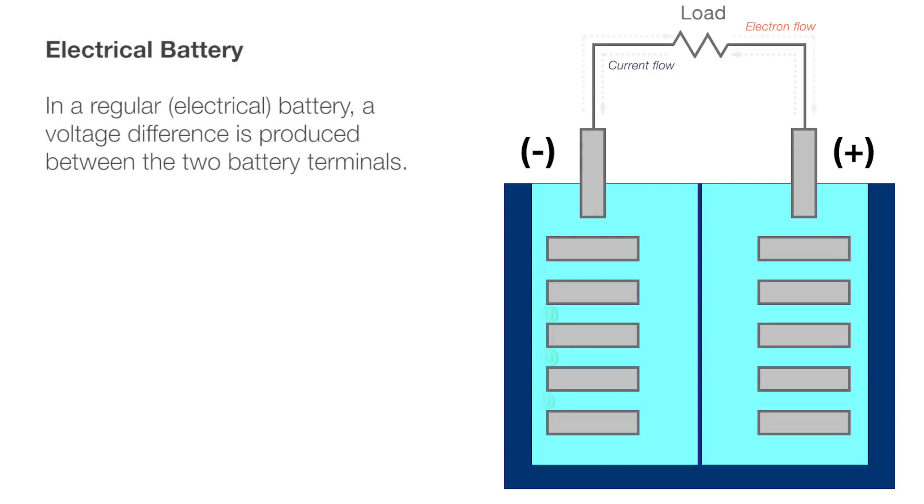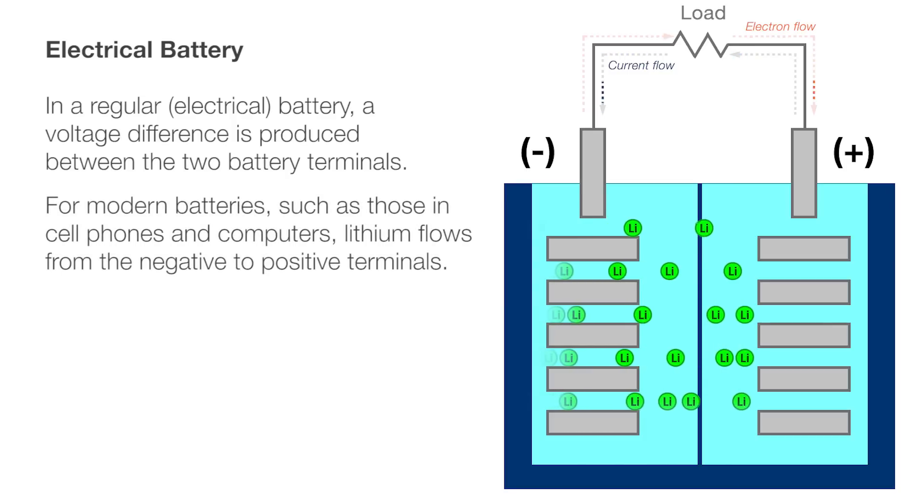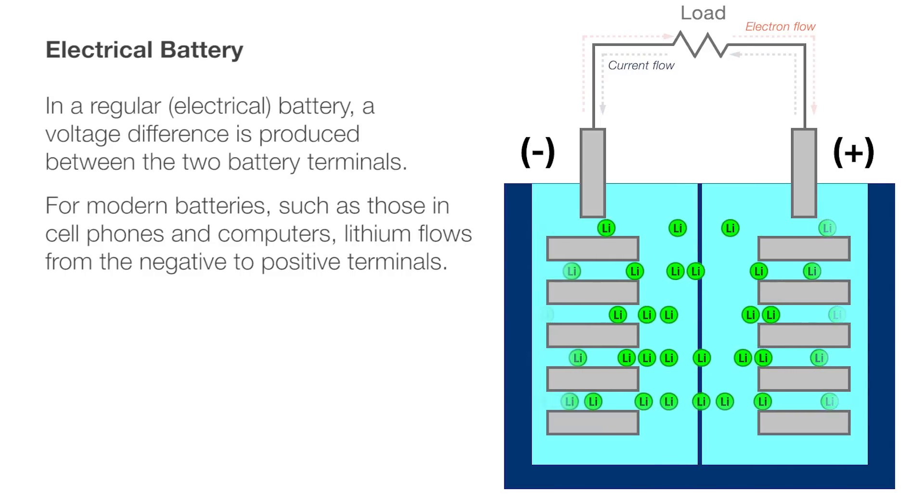In a regular electrical battery, a voltage difference is produced between the two battery terminals. For modern batteries, such as those in cell phones and computers, lithium flows from the negative to positive terminals.